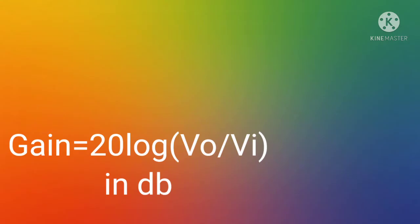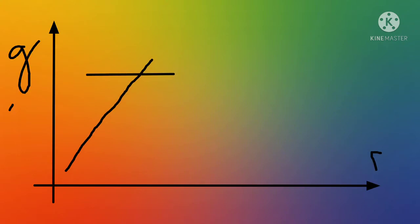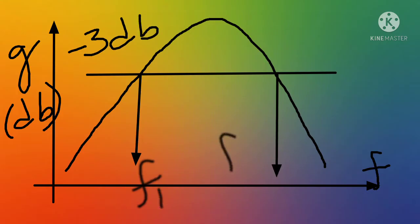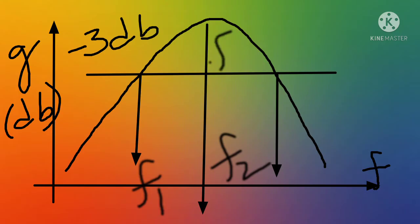After obtaining all values, we plot the variation of gain with respect to frequency. At minus 3 dB, a horizontal line touches the graph at two points: the lower cutoff frequency and the upper cutoff frequency. The difference between these is the bandwidth. The resonant frequency is where the gain is maximum — approximately 0 dB — because the output voltage is maximum at that frequency.